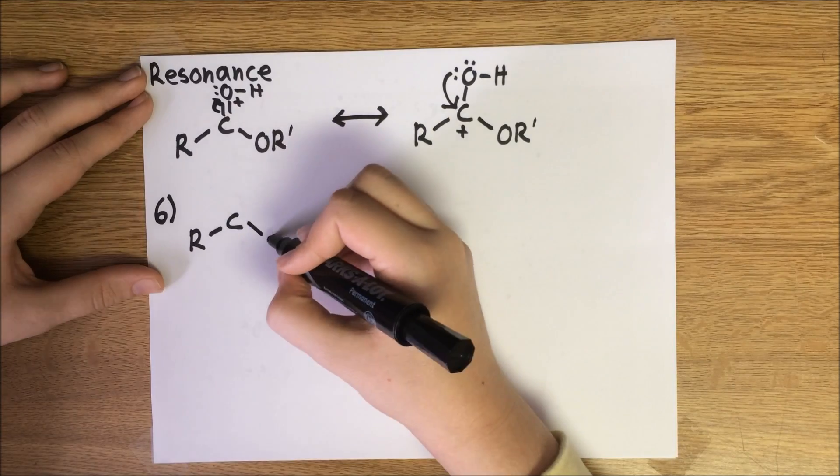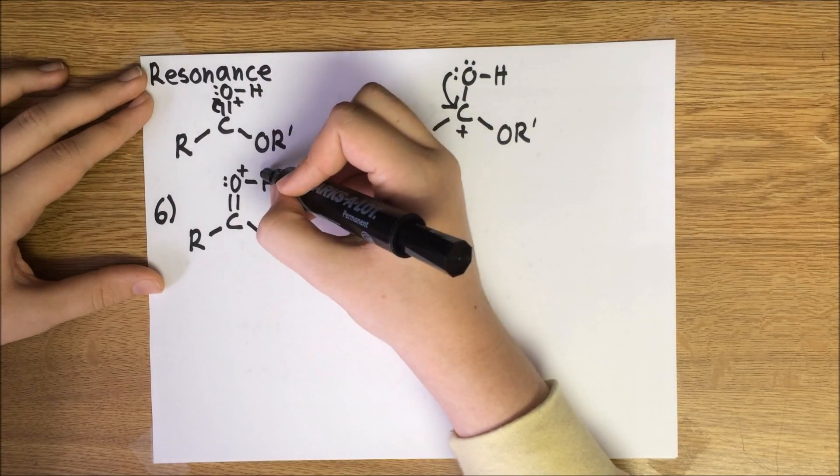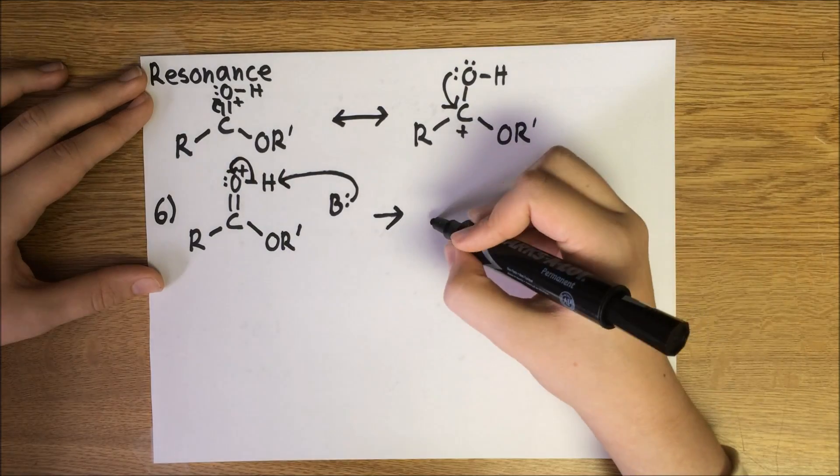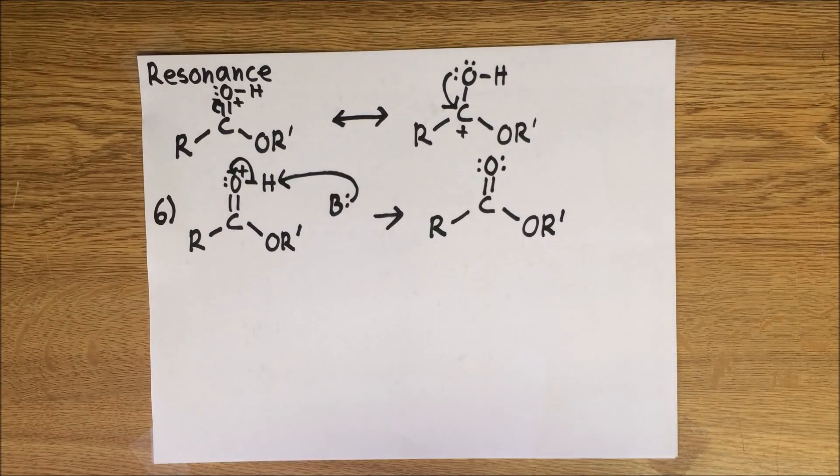The final step is to deprotonate the ion with a base. The base attacks the hydrogen, pulling it away and leaving a pair of electrons behind for the oxygen. This forms our neutral final ester.